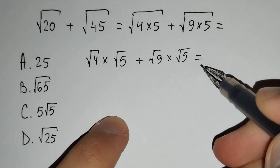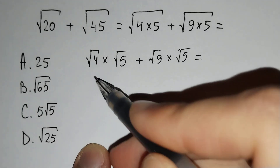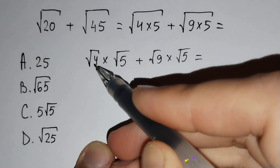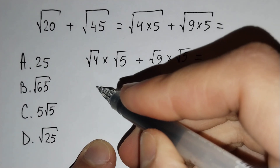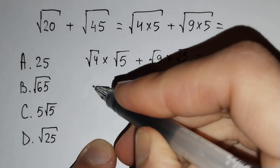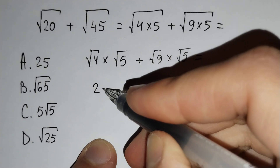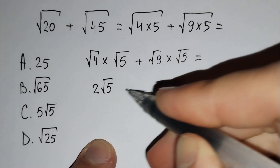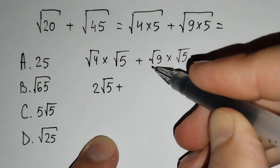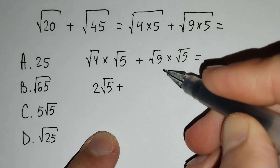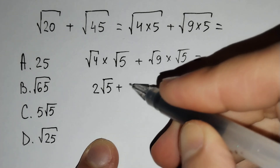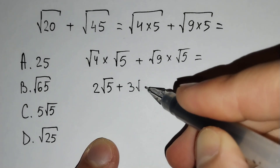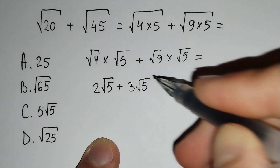This is equal to: the square root of 4 is equal to 2 times square root of 5, plus the square root of 9 is equal to 3 times square root of 5.